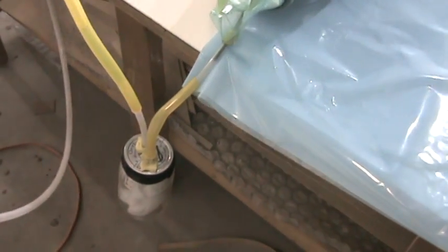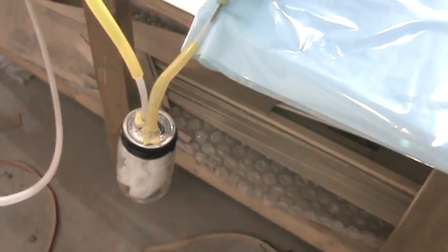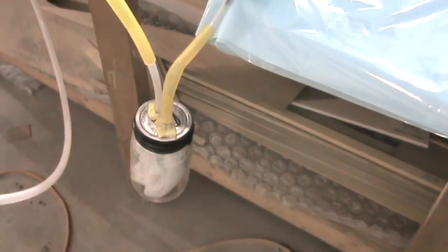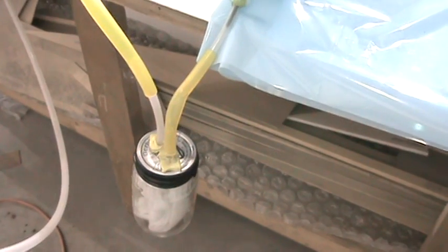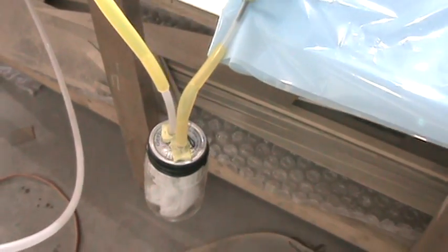We have a small improvised resin trap, just some absorbent material inside of a baby food jar. One tube runs all the way to the bottom, the other is at the top.